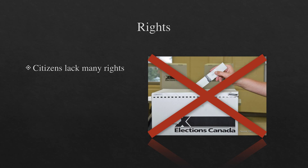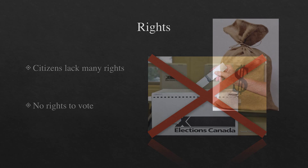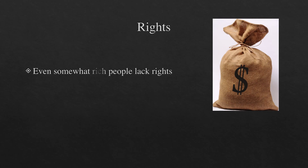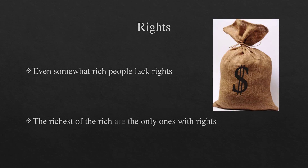Rights. In an oligarchy, citizens lack almost all basic rights. These rights include voting and equal treatment. Even if you are a millionaire, you're probably not going to be among the small group of people leading the oligarchy, because there are probably others that are still much richer than you. Only the richest of the rich have power and rights.